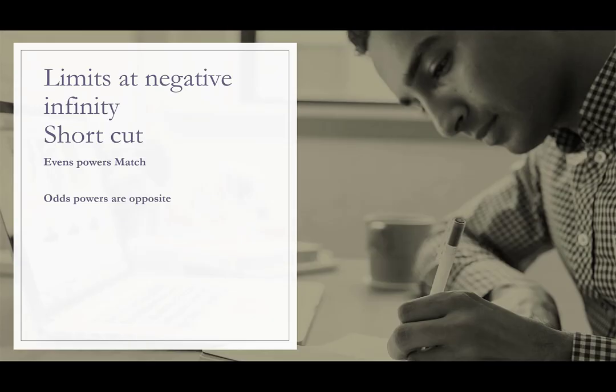To find the limits at negative infinity, we have a shortcut: even powers match, odd powers are opposite. Even powers match means the limit on the right is the same as the limit on the left — what happens at infinity also happens at negative infinity. Odd powers are opposite means whatever happens on the right, the left will be opposite.